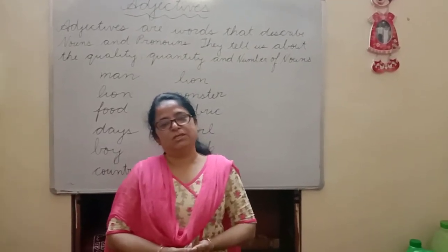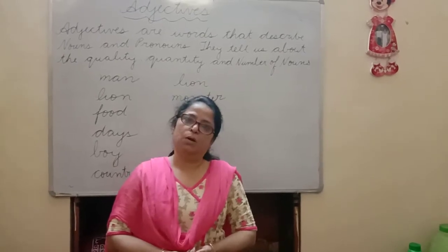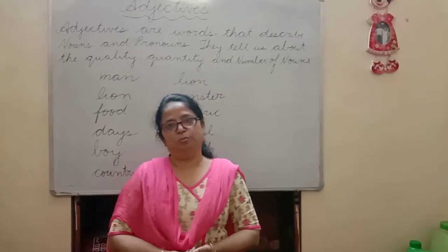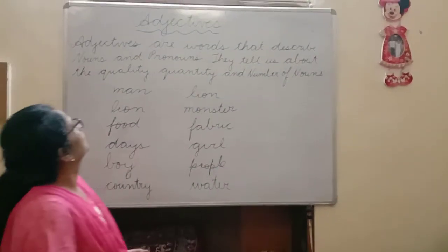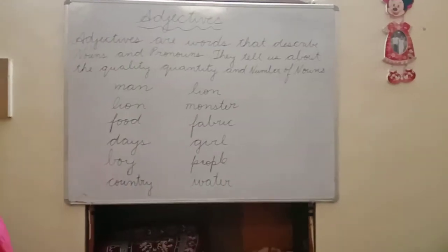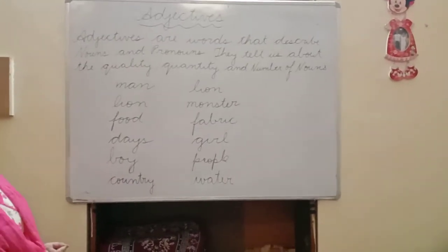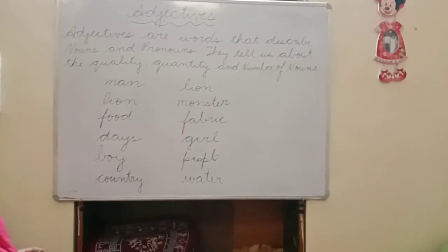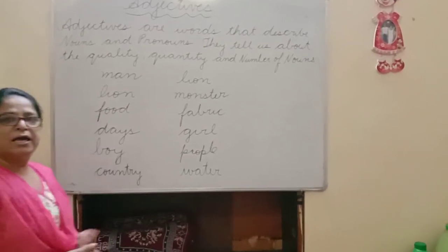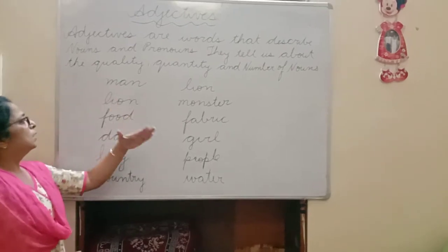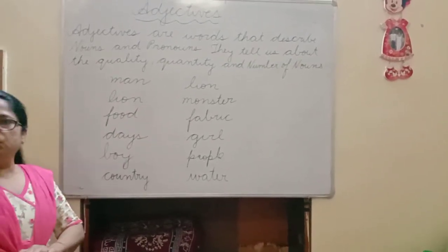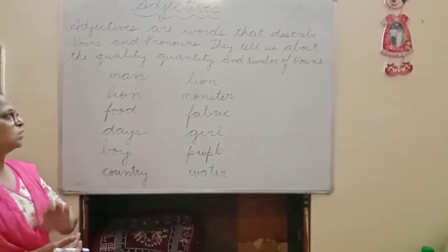Adjectives are words that describe a noun or a pronoun. Please look on the board. Adjectives are words that describe nouns and pronouns. They tell us about the quality, quantity and number of nouns. I have written a few noun words here children, and let us add a describing word to it so that your concept is clear.